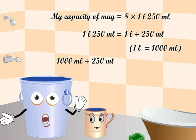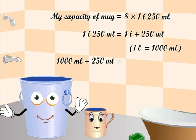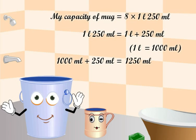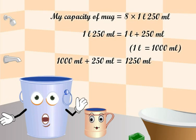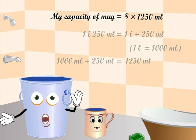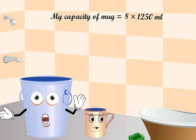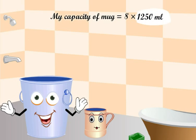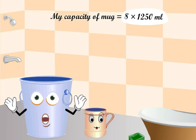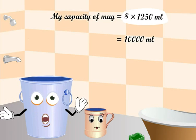And 1000 milliliters plus 250 milliliters is equal to 1250 milliliters. Now we just need to multiply this 4 digit number by 8, and the product comes as 10,000 milliliters.